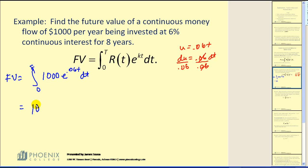The next step, I would factor out the thousand. And I can rewrite this as e to the U. Now when I replace DT, I replace it with DU divided by point zero six. So I'd put the DU here and I would factor out the point zero six there. Now we can go ahead and integrate.